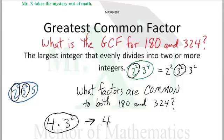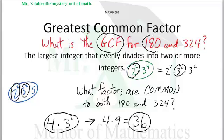Turns out 4 times 9 is 36 and indeed 36 is the greatest common factor for 180 and 324. You may have already surmised that 36 times 5 is 180 and 36 times 9 is 324.